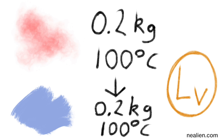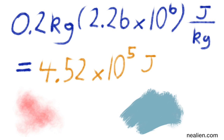Let's start with 0.2 kilograms of steam at 100 degrees Celsius. It's going to all turn into liquid water, and in the state transition it's not going to change temperature — it's just going to change state. We'll use the latent heat of vaporization. As the steam turns into liquid, it's going to release energy. The calculation is 0.2 kilograms multiplied by 2.26 times 10 to the sixth joules per kilogram, giving an energy release of 4.52 times 10 to the fifth joules.